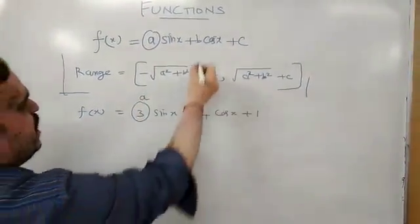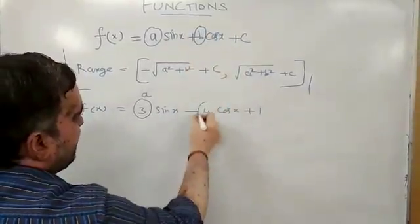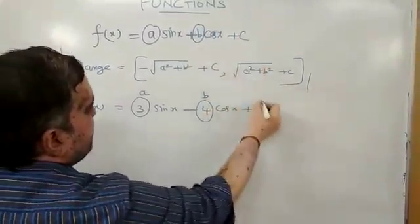A is 3. Compare with the general format. B is equal to -4. C is equal to 1.